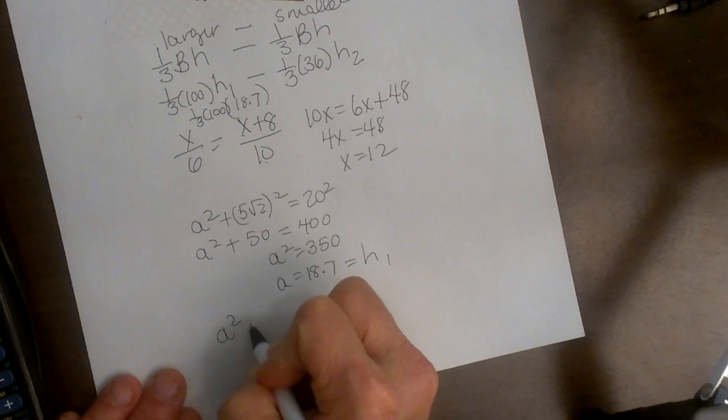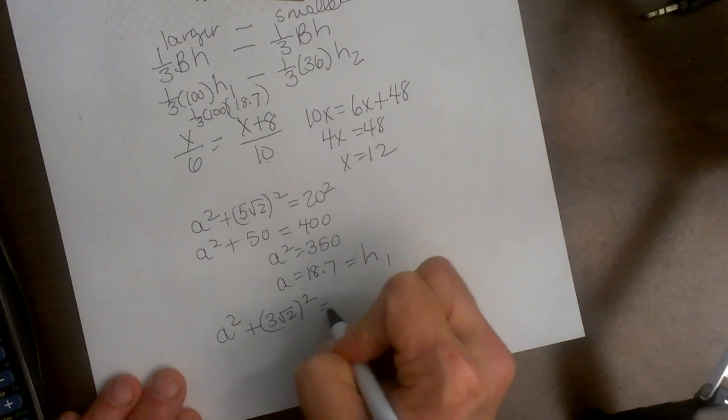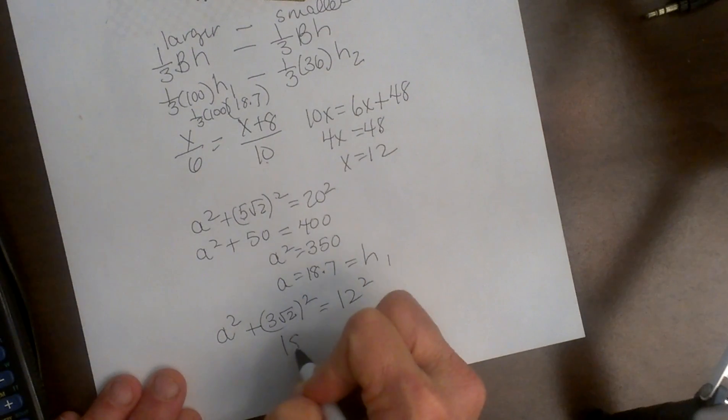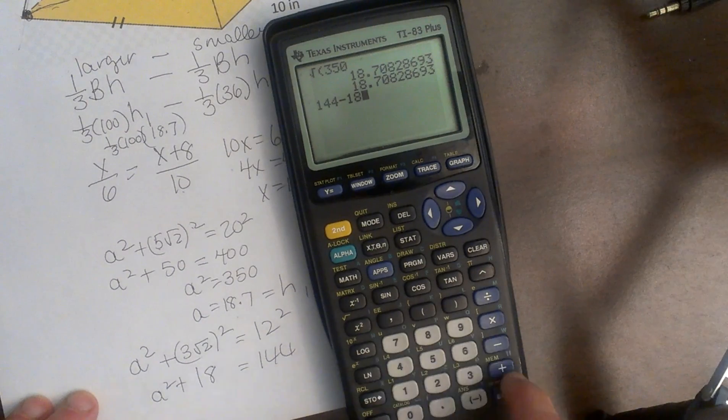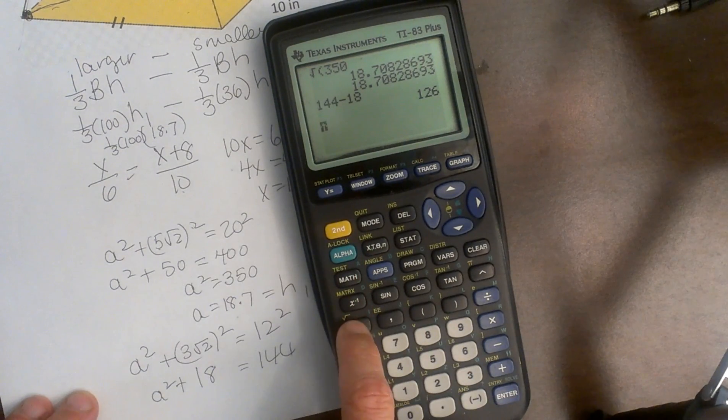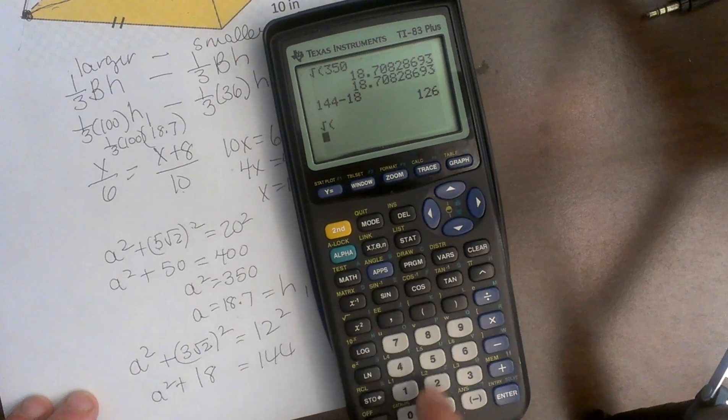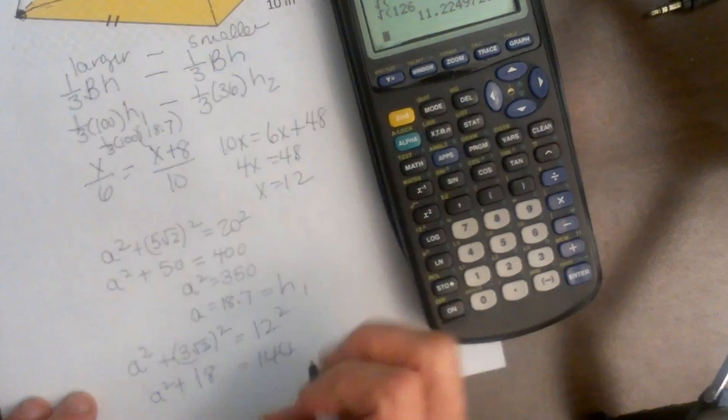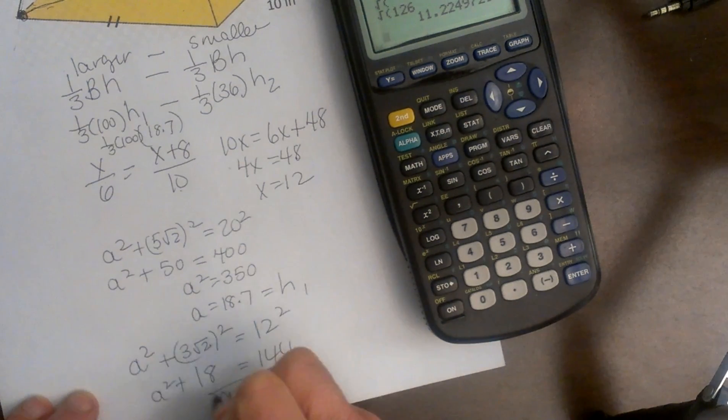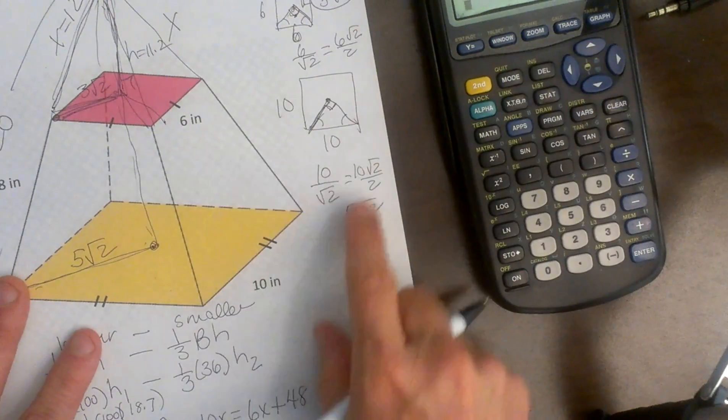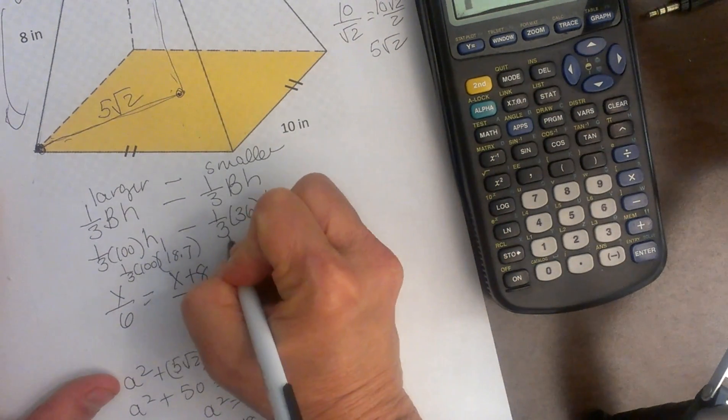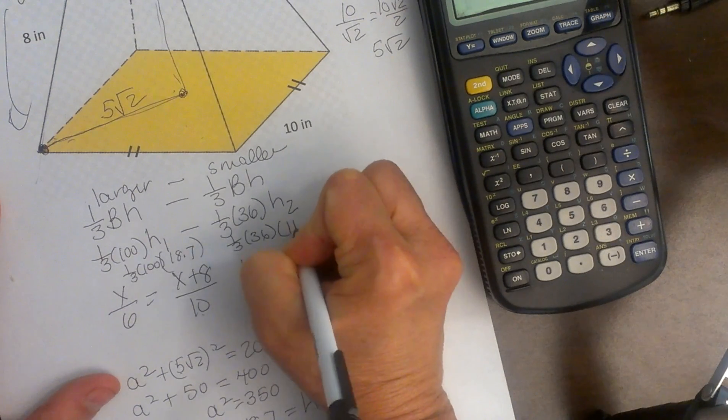a squared is my height plus 3 root 2 squared is equal to 12 squared. So that is 9 times 2 which is 18 is equal to 144. So a squared is equal to 144 minus 18. Let's see 144 minus 18 and then I am going to take the square root of 126. Square root of 126 is 11.2. So a is equal to 11.2. So that is my other height. So that is this height 11.2. Now I can plug that into my formula right here. So 1 third of 36 times 11.2.